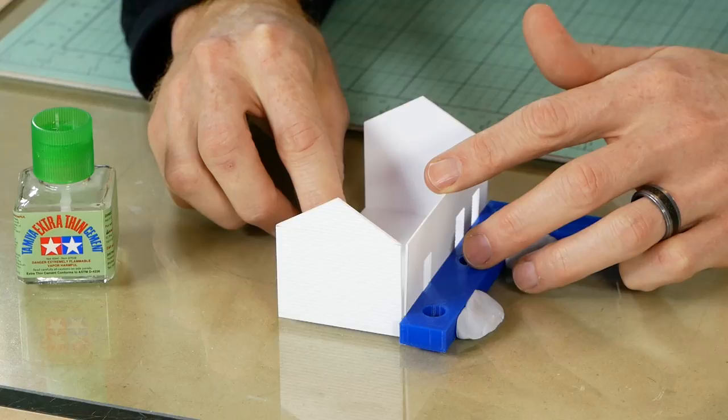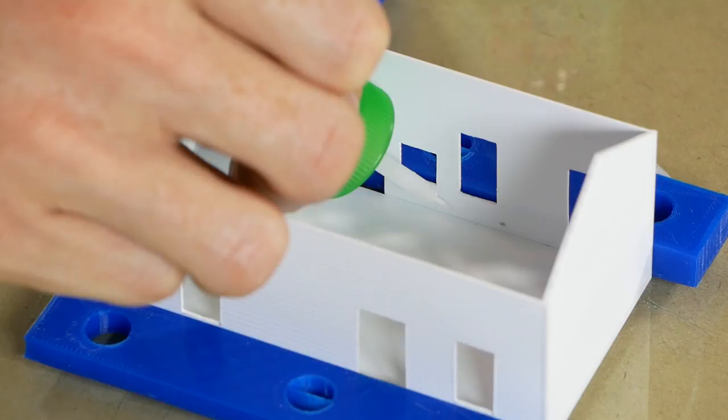This process is repeated around the base until all the walls are glued together but only glue the bottom edge of each wall and not up the side just yet.